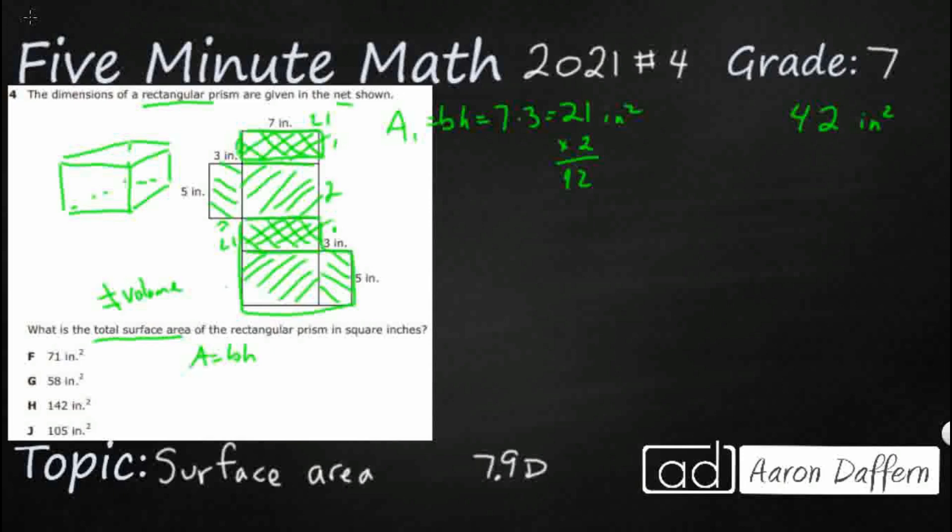So 42 inches squared for these two rectangles that are one. Let's do these two big ones right here. So the area of the second big one, also base times height. And you don't necessarily see any measurements right on there. But you can tell. So this big base right here matches with that seven, just like the other one.